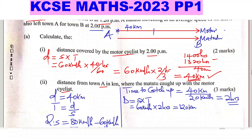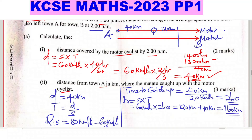However, 120 km is not the distance from A — it is the distance from the point where the motorcyclist was at 2 PM, having already covered 40 kilometers. So to get the total distance from A, we add: 40 + 120 = 160 kilometers.